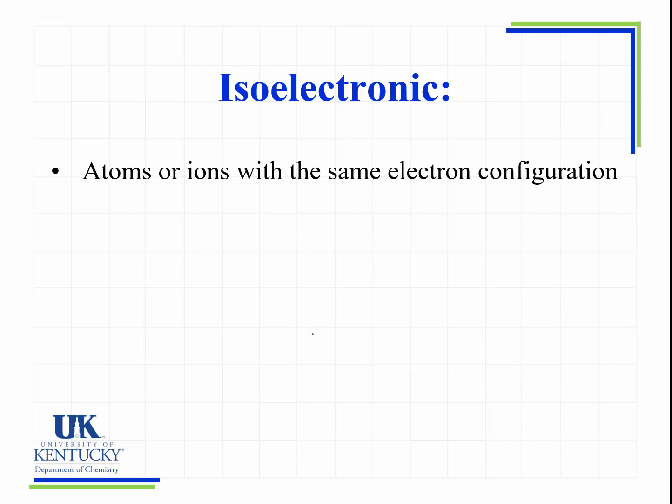Any atom or ion that has the same electron configuration is said to be isoelectronic. So here are a couple of examples. We have F- with this electron configuration and O2- with this electron configuration. Notice how their electron configurations are the same.